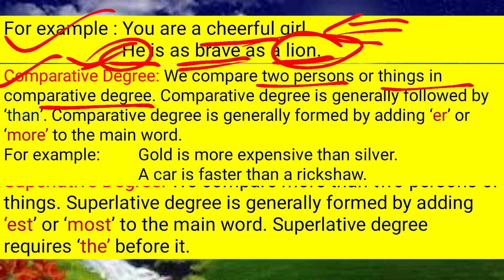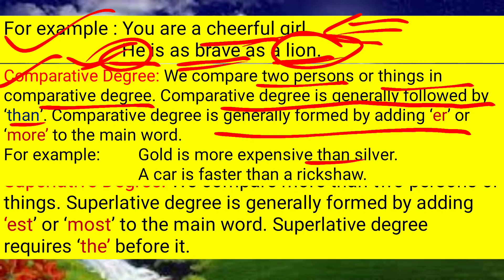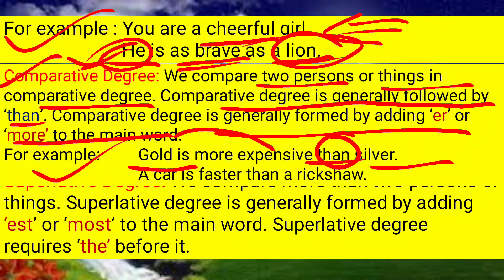In comparative degree, we compare two persons or things, and it is generally followed by 'than.' Comparative degree is formed by adding -er or 'more' to the main word. For example: 'Gold is more expensive than silver' — comparison is made between gold and silver. 'A car is faster than a rickshaw' — comparison is made between car and rickshaw.